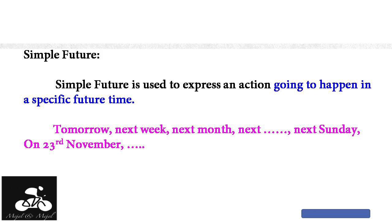Simple future tense is used to express an action going to happen at a specific future time. When we are talking about a particular time in the future, we use simple future tense, formed with 'shall' plus simple form or 'will' plus simple form.